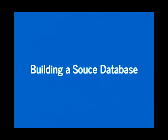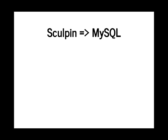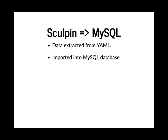In this particular use case, I had to build a source database because I didn't have one. We were migrating from a project called Sculpin — a static site generator, similar to Jekyll or Octopress, written in PHP and extending various Symfony components. What I ended up doing was extracting the data from YAML — Sculpin stores its configuration in YAML — then created a separate database from that data using a custom script with a few more Symfony components. The result was a database with a venues table, an events table, speakers, and talks.